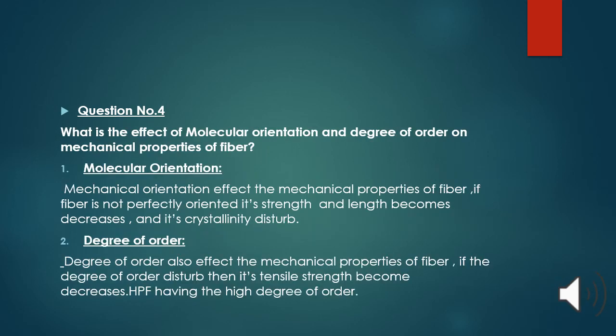Question number four: What is the effect of molecular orientation and degree of order on mechanical properties of fiber? Molecular orientation - molecular orientation affects the micro-mechanical properties of fiber. If the fiber is not perfectly oriented, its strength and length decrease and its crystallinity is disturbed. Degree of order - degree of order also affects the mechanical properties of fiber. If the degree of order is disturbed, then its strength decreases. High performance fiber has high degree of order.